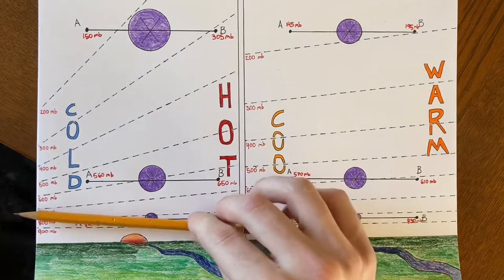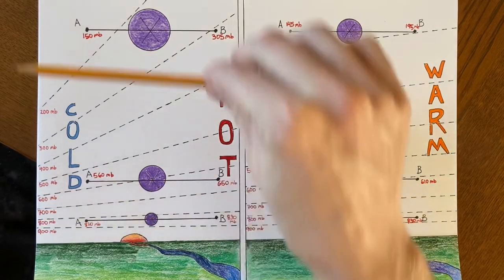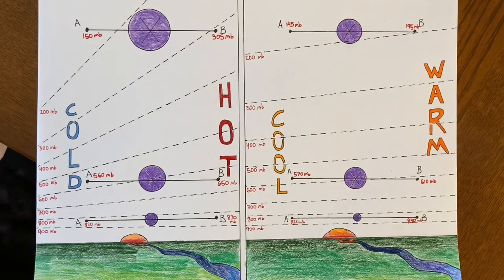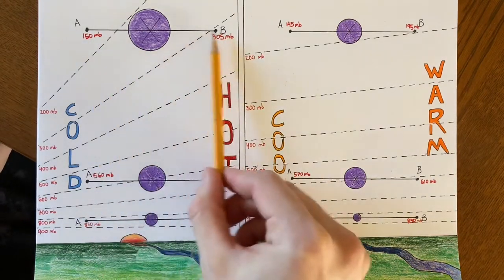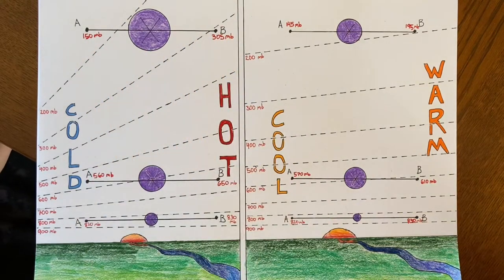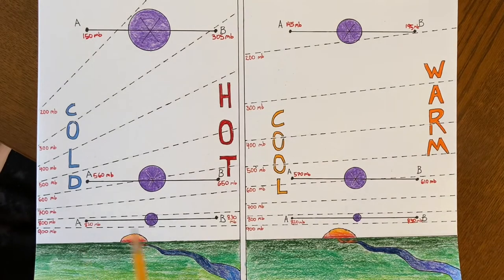These are parallel with the surface here. But because of the slope of the pressure lines, because of the difference in temperature of these air masses, even though they're at the same level, A and B have different pressures. And because the lines near the surface don't slope very much, it's not a very big difference.